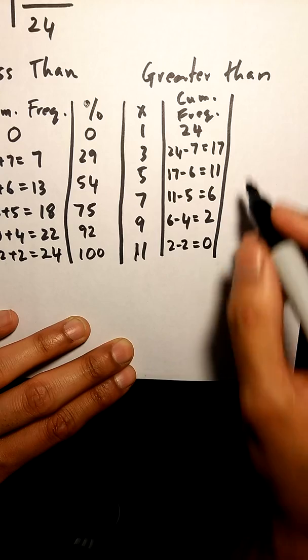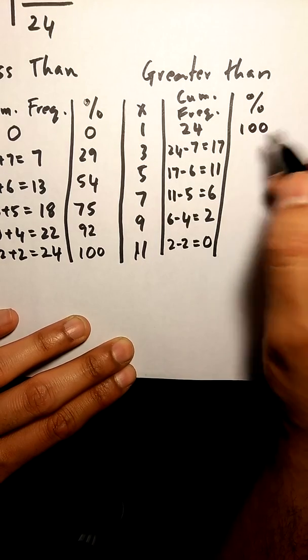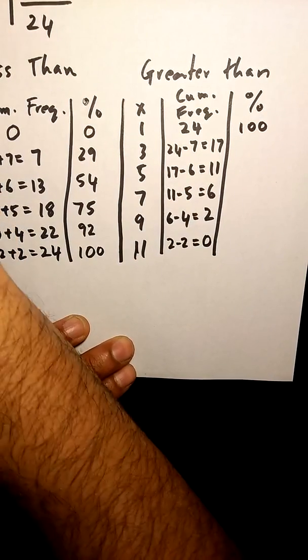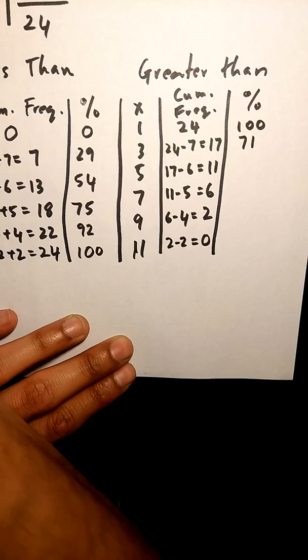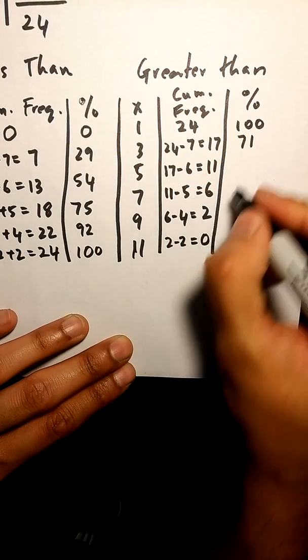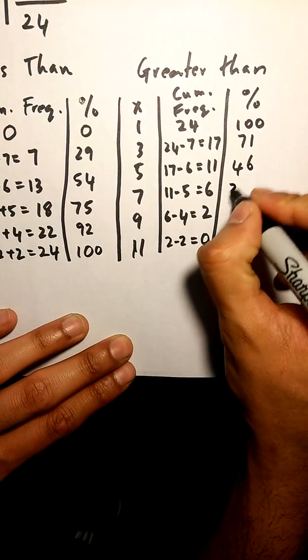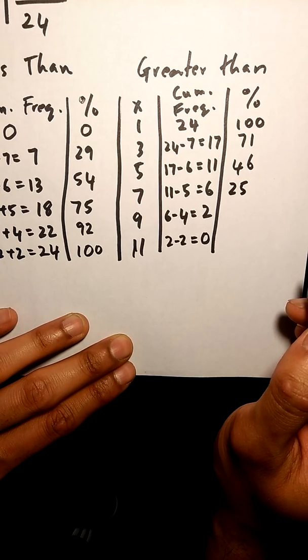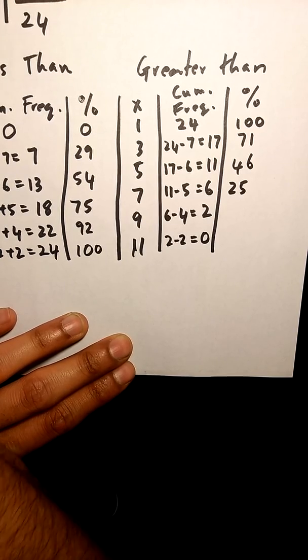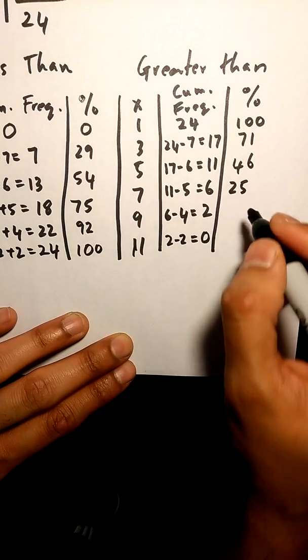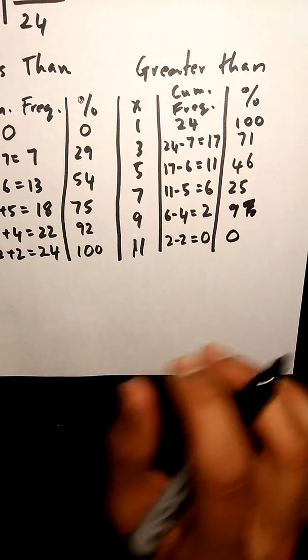The last thing, we're going to convert these numbers here to percentages. So we know our starting percentage is 100. Next I'm going to do 17 divided by 24 times 100, which is 71 percent. Then 56 percent, 25 percent, 8 percent, and 0 percent.